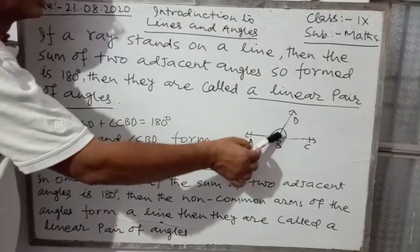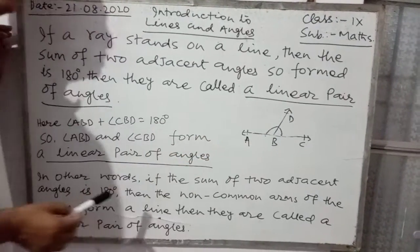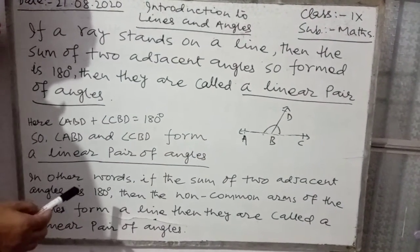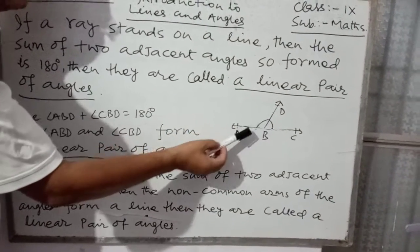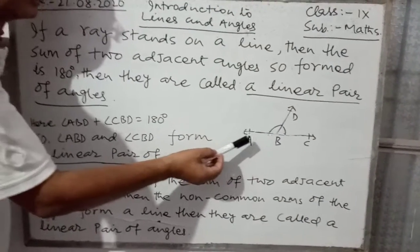So linear pair of angles kya hai? A ray jab a line per stand hota hai, to adjacent angle form hota hai, yaha two adjacent angle hai.